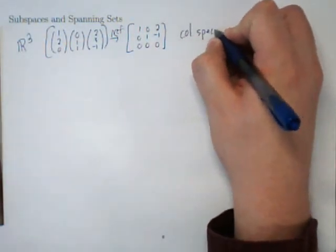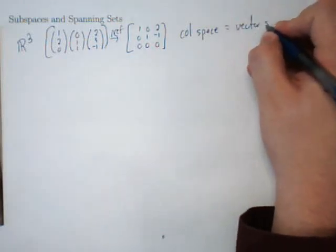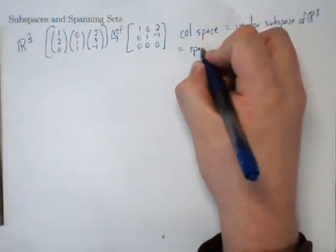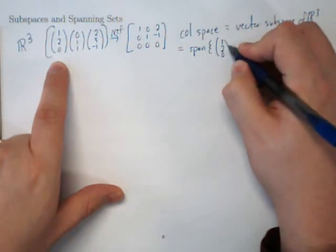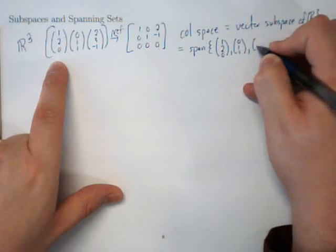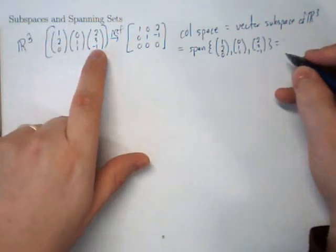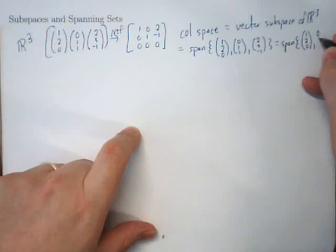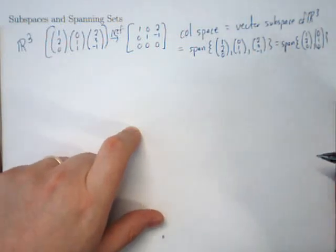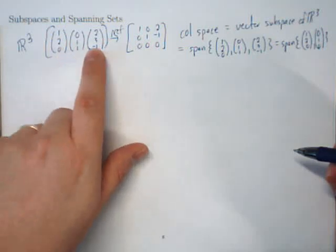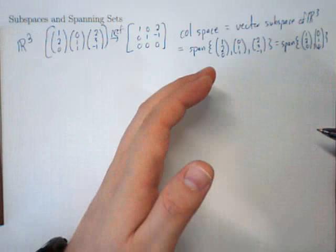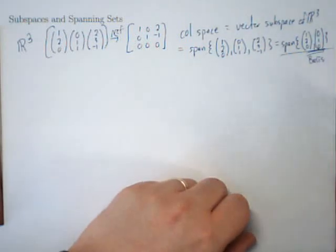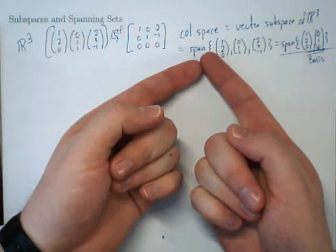The column space is a vector subspace of R3. You can think of the column space as the span of the three vectors (1, 2, 0), (0, 1, 1), and (2, 3, -1). But since the third vector depends on the first two, we can remove it from our spanning set and just go with (1, 2, 0) and (0, 1, 1). By removing it, we shrink down the number of vectors needed to span the column space. This set of vectors is called a basis for the column space.